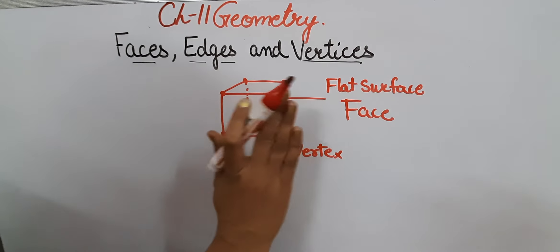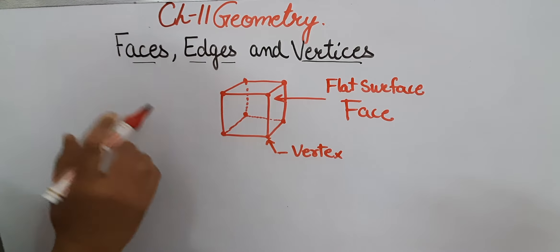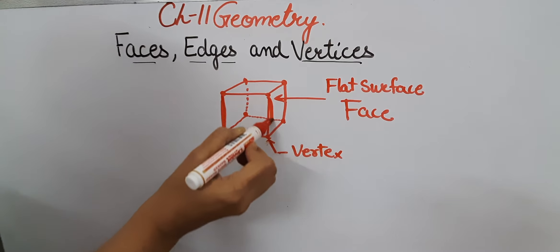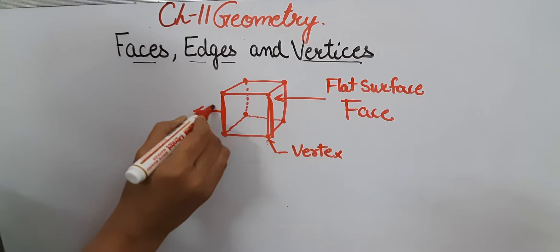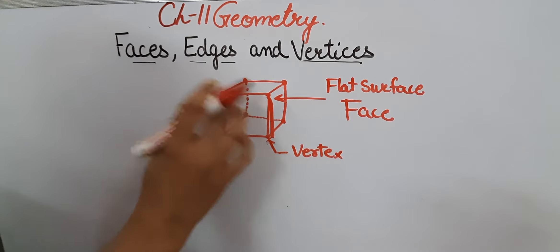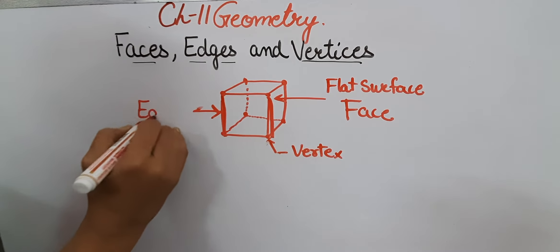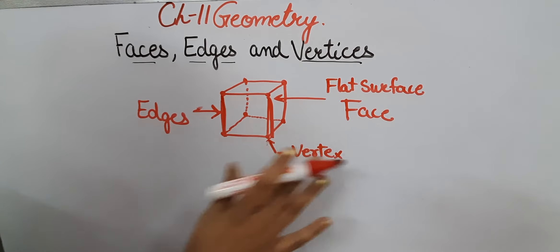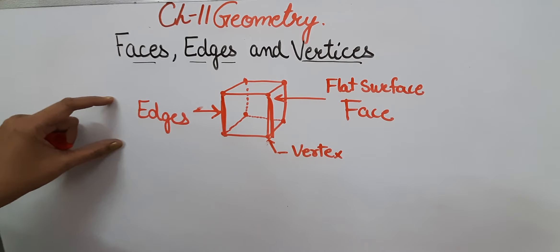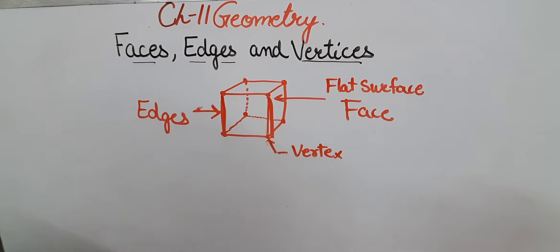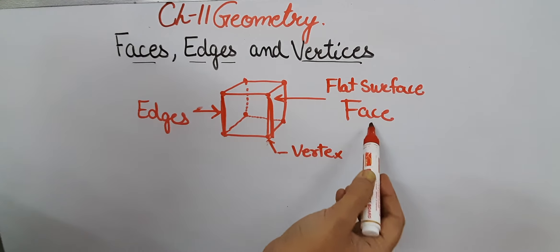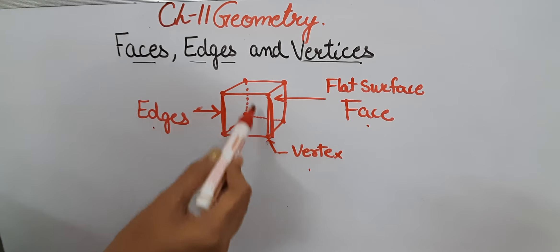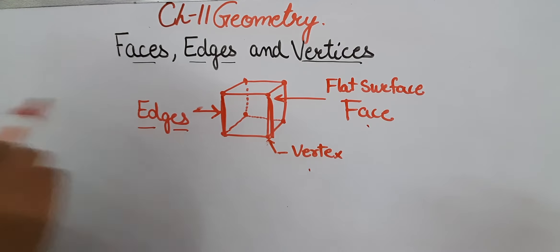Edges are formed when two faces meet. One flat surface and another flat surface meeting at a line — those lines are the edges of the shape. So to summarize: the flat surface itself is the face, corners are known as the vertex, and where two flat surfaces meet is known as the edges.